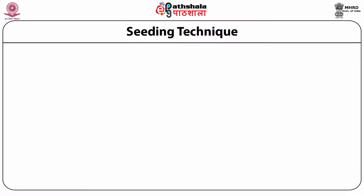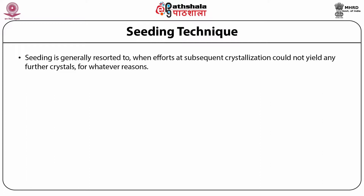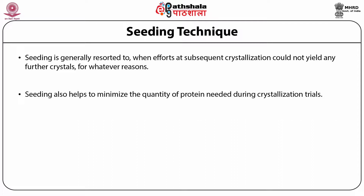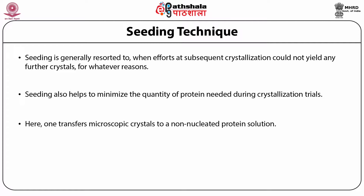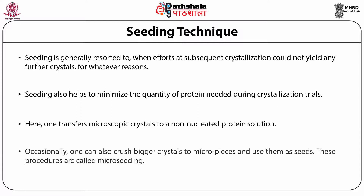Now we are going to look into the seeding technique. Seeding is generally resorted to when efforts at subsequent crystallization could not yield any further crystals, because of the multi-parameter problem. Seeding also helps to minimize the quantity of protein needed during crystallization trials. Here, one transfers microscopic crystals to a non-nucleated protein solution. Occasionally, one can also crush bigger crystals into micro pieces and use them as seeds. These procedures are called micro seeding.